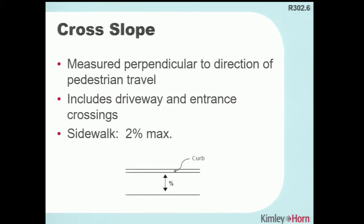With all these maximum thresholds for compliance, there are no such thing as construction tolerances in ProAG. If you want construction tolerances in your design, you need to build them in from the start. For cross slope, you might specify a maximum of 1.5 percent so that if it gets built at 1.6 or 1.7 percent you're still under the compliance threshold — rather than designing to 2.0 and then having it constructed at 2.1 percent, forcing you to tear out brand new concrete.